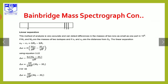Ions with the same charge but different masses follow paths of different radii, striking the photographic sheet at different positions and producing lines with different separations.